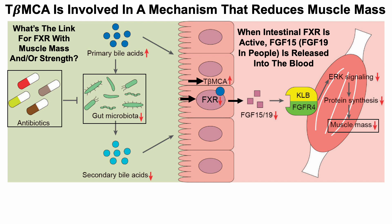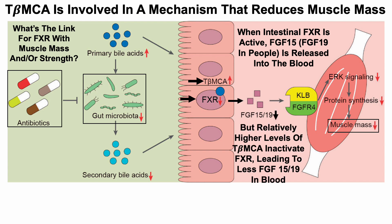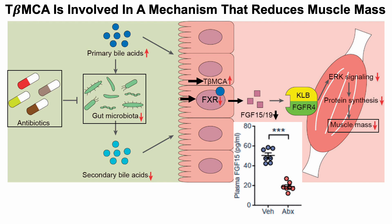Relatively higher levels of tauro-beta-MCA inactivate FXR, which leads to less FGF-15 or FGF-19 in the blood. We can see that here: plasma levels of FGF-15 in the antibiotic-treated mice versus the non-treated mice show a significant reduction in the antibiotic-treated group — in line with the mechanism of more tauro-beta-MCA leading to less FXR activation and less FGF-15 being released into the blood.